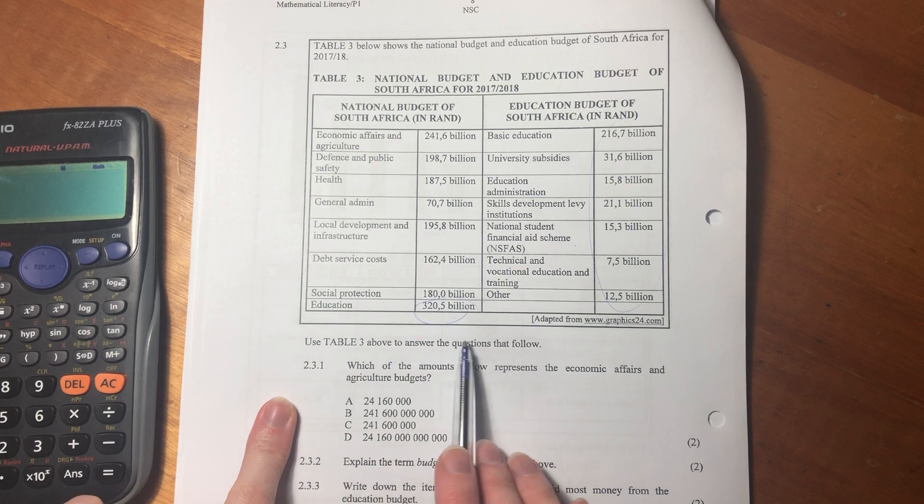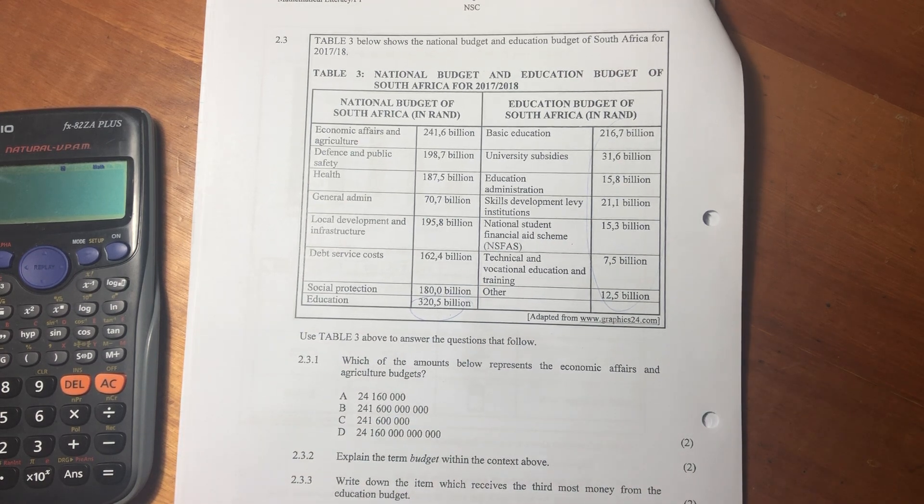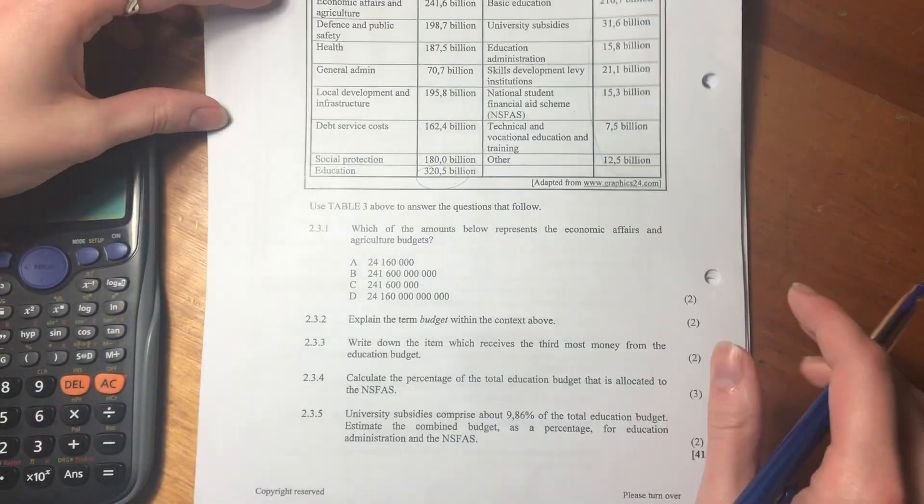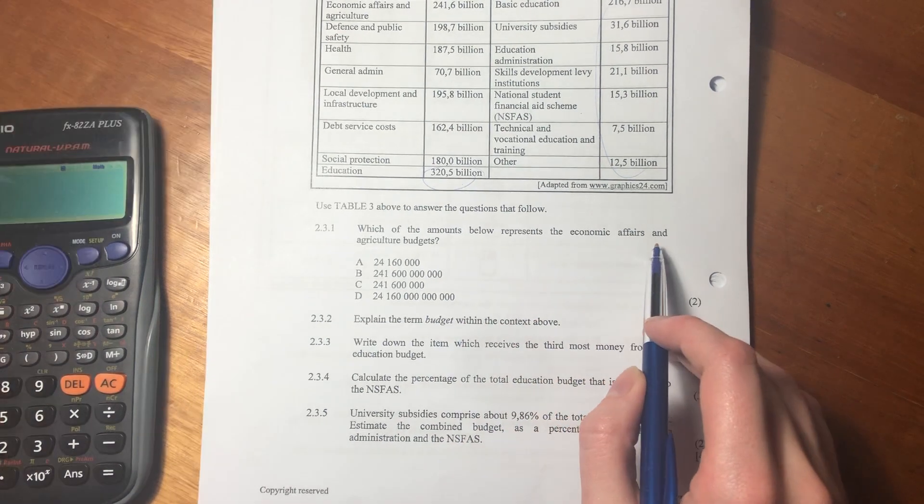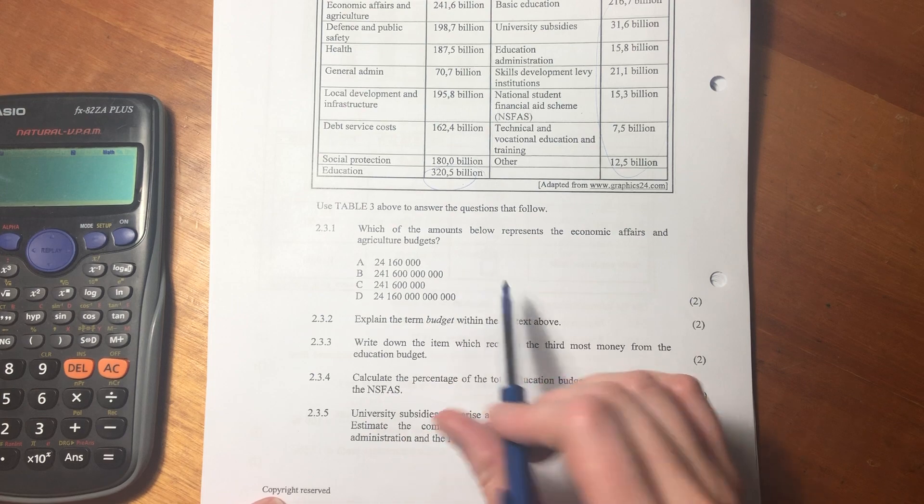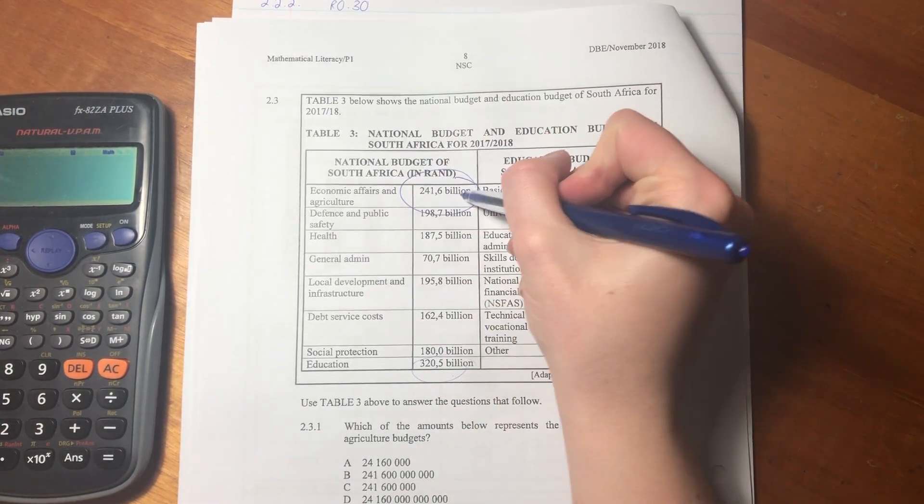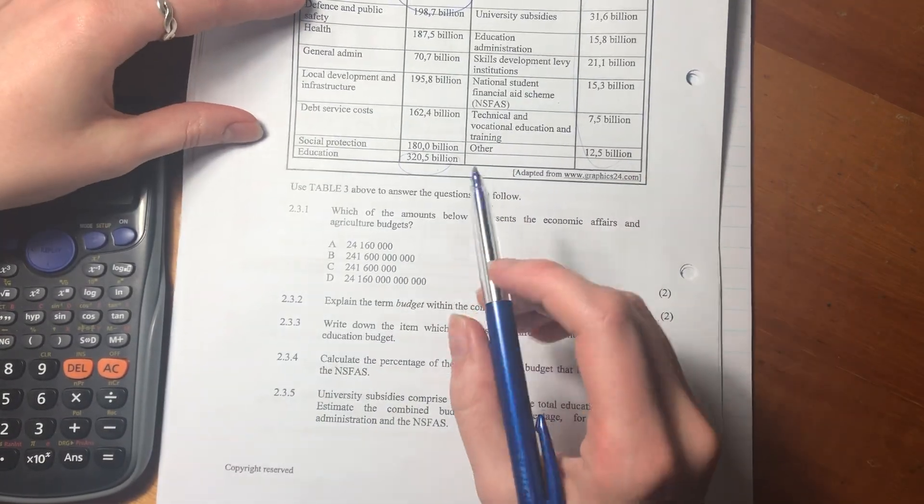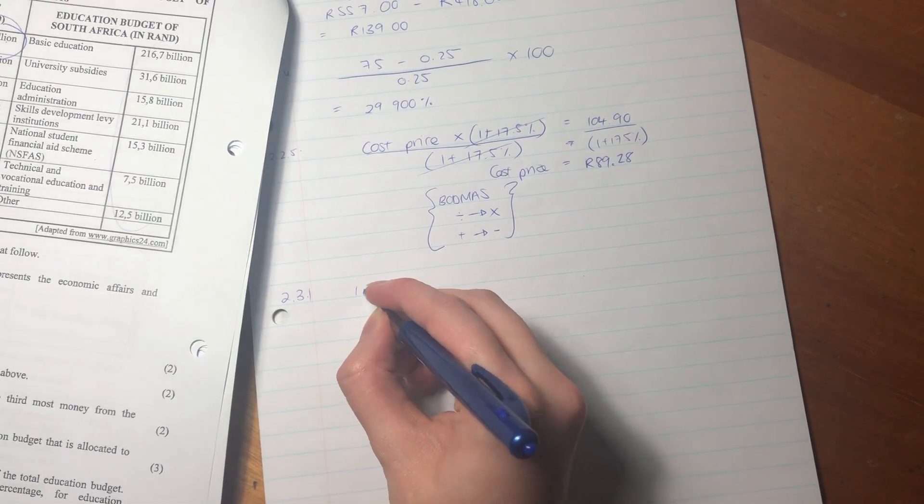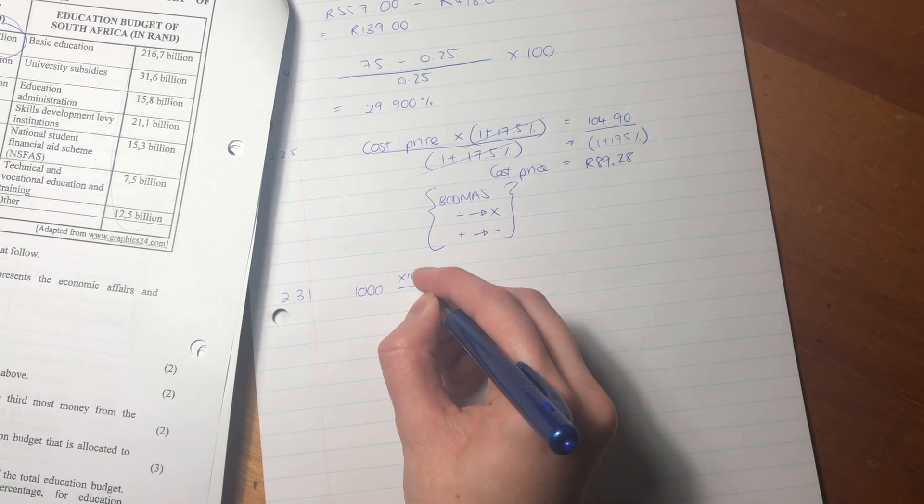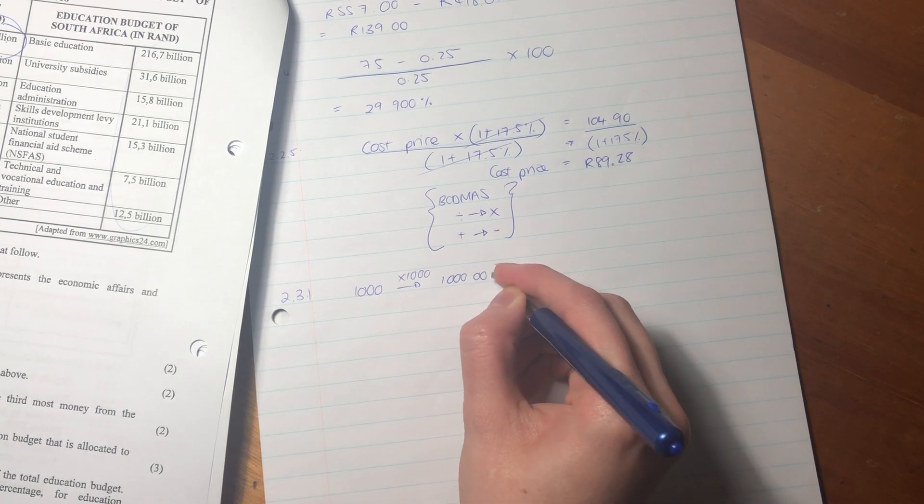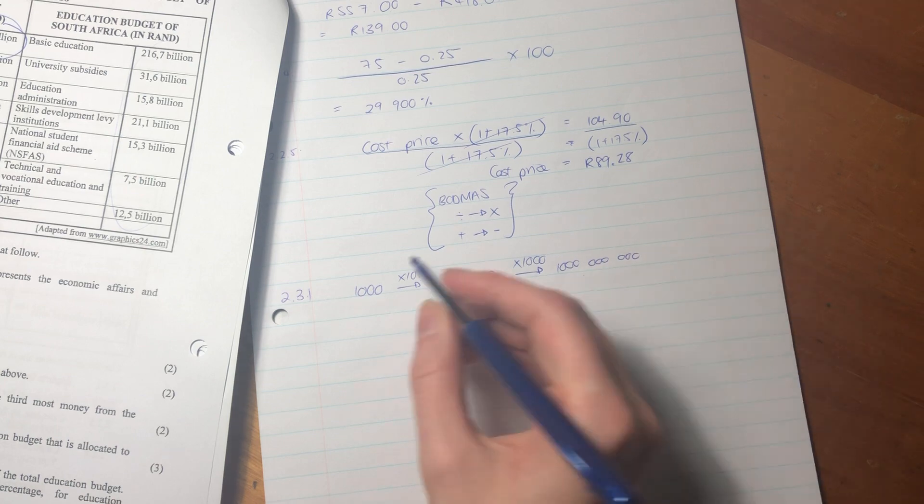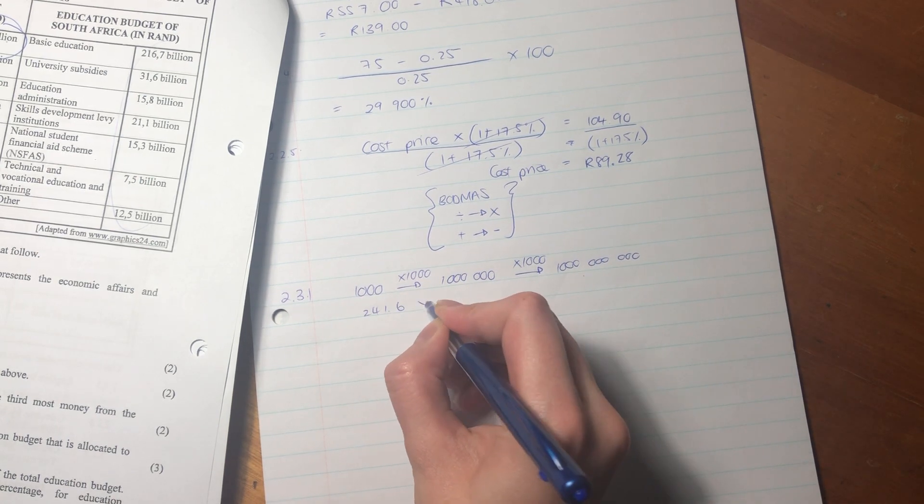So it says use table three above to answer the questions that follow. Let me just write 2.3.1 so we know where we're at. So it says which of the amounts below represents the economic affairs and agriculture budgets? So that is this amount over here. But they've written it in billion, and over here they've written it out in digits. So now we need to figure out how many zeros a billion has. So we know that 1,000 thousands is a million, and 1,000 millions is a billion. So we need to say 241.6 times this amount here.